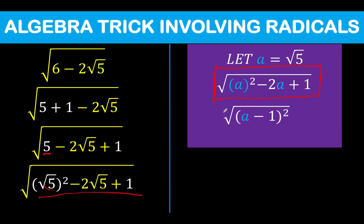And from here, since extracting the square root and raising to exponent 2 are inverse operations that cancel each other out, then the result now is simply the radicand a minus 1.